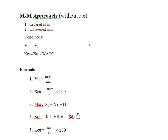So, with tax or without tax, we have two ways. We have a limited firm and an unlimited firm. In the limited firm, we have a loan and a debt.